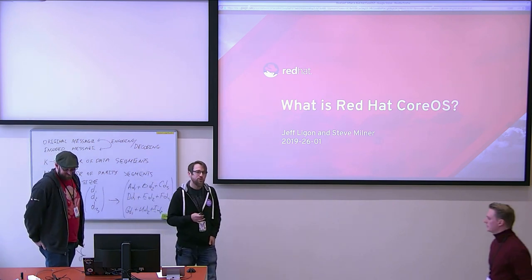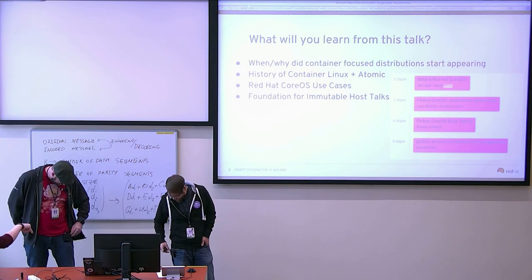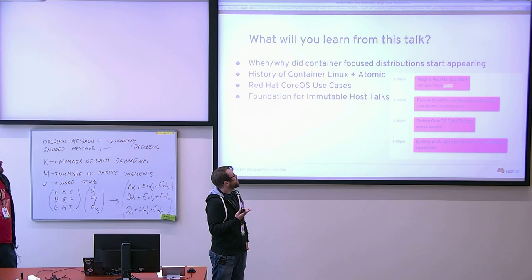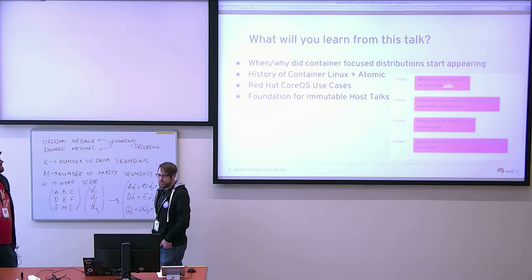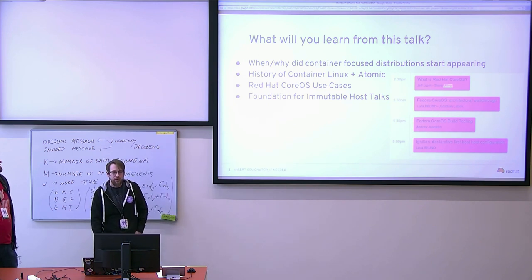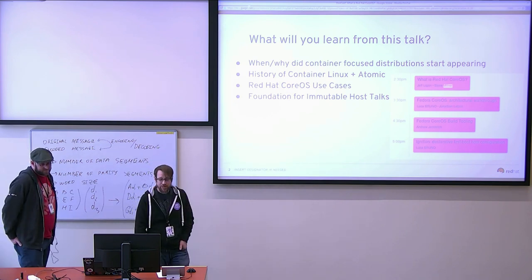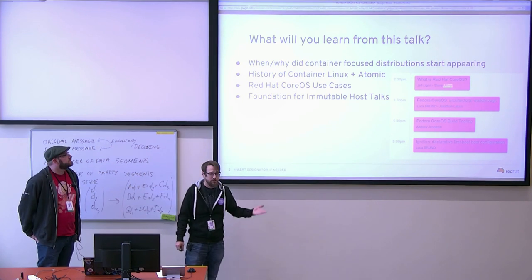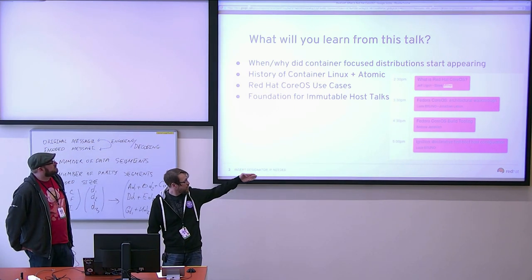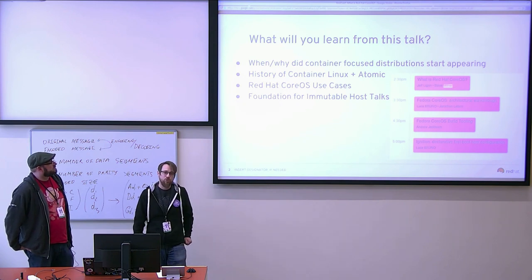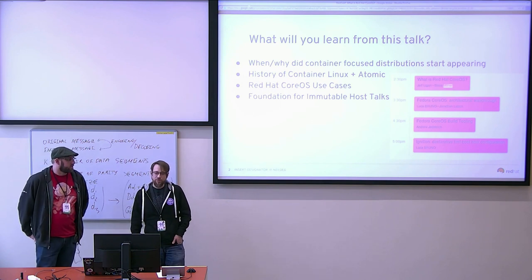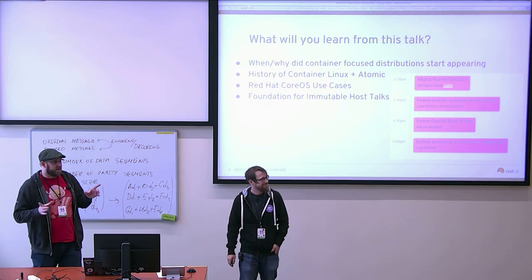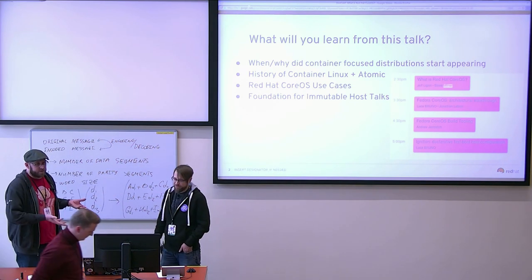These questions are just a gauge to see how deep we should be going into some of these topics. What we expect you to learn from this talk: when and why container-focused distributions started appearing, a history of Container Linux plus Atomic, what happened after the acquisition, the use cases of Red Hat CoreOS, and foundations for the following talks in this room. The plan for this talk is to be very high level — hand-wavy and not too nitty-gritty. Later speakers will go into deep detail about things like Ignition and other technologies.